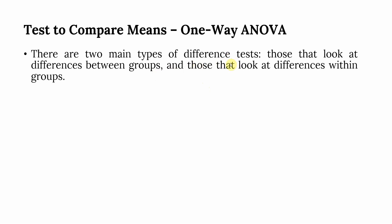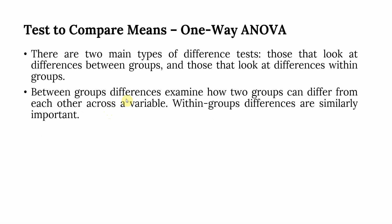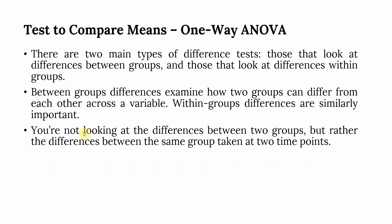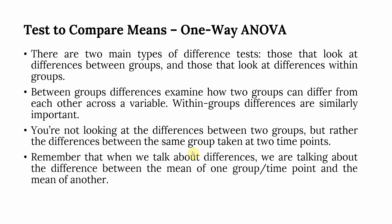There are two main types of difference tests: those that look at differences between groups, and those that look at differences within groups. Between-group differences examine how two groups can differ from each other across a variable. Within-group differences look at differences within the same group taken at different time points — that is, the differences between the mean of a group at one point in time versus another.